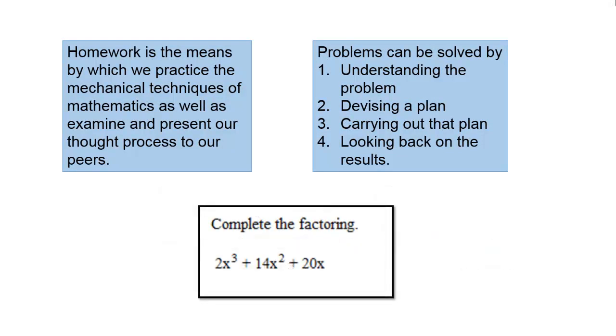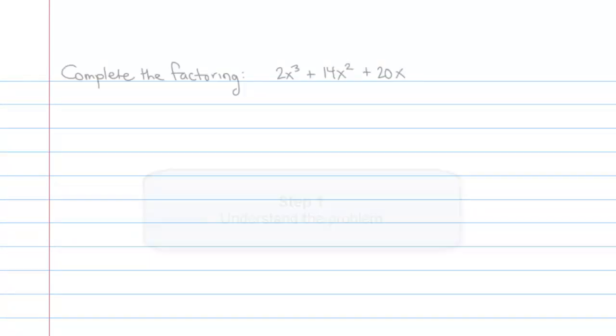Complete the factoring: 2x cubed plus 14x squared plus 20x. To get started, let's get a piece of scratch paper and get working. The first step of the process is to understand the problem, which means I'm going to write the problem down. Complete the factoring 2x cubed plus 14x squared plus 20x.